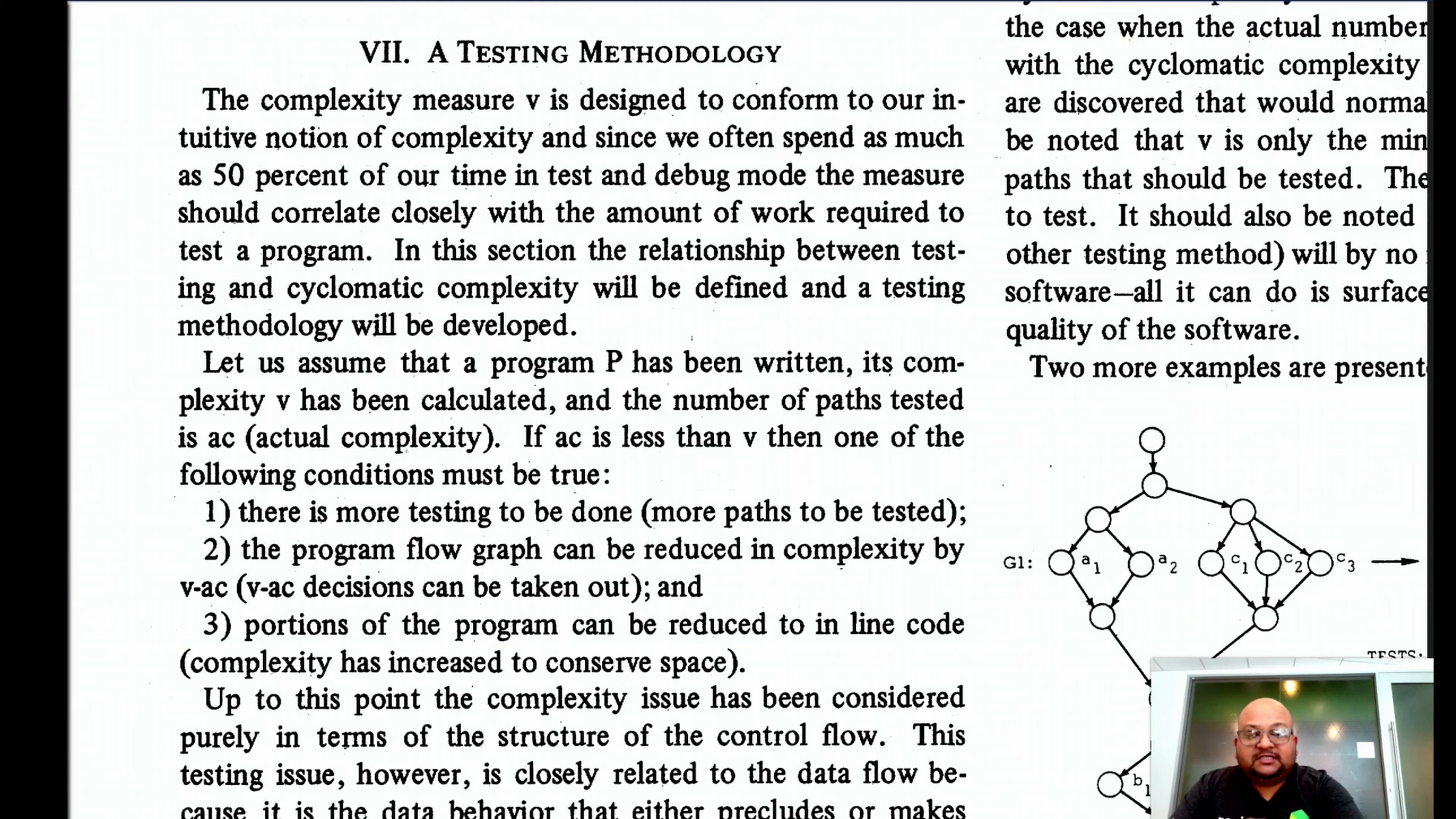And all this brings us back to testing, which was one of the initial motivations for proposing this cyclomatic complexity measure in the first place. Suppose you have a program P with cyclomatic complexity V and the number of paths tested is AC, which the author refers to as its actual complexity. Now, if AC is less than V, what does that mean? That means you definitely have some more testing to do because not all paths have been tested.